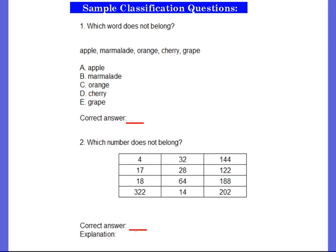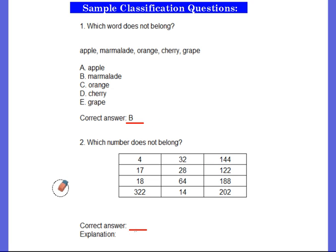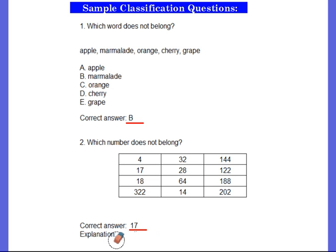For the classification questions, number one says: which word does not belong? We have apple, marmalade, orange, cherry, and grape. If you want more time, pause the video. The answer is B. For number two, which number does not belong? If you need more time, pause the video. The answer is 17, and the explanation is that 17 is the only odd number.